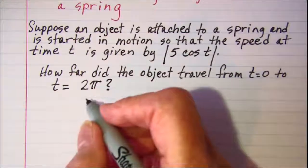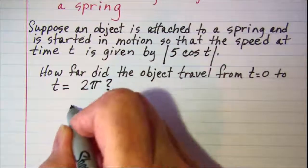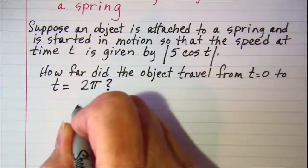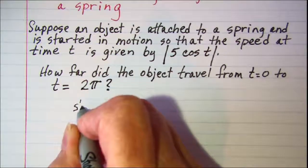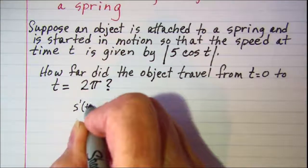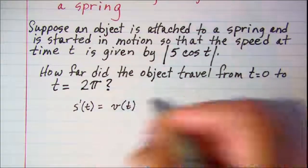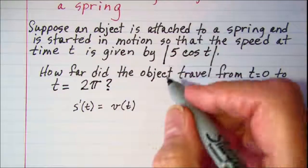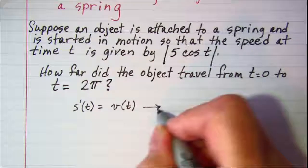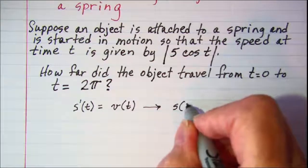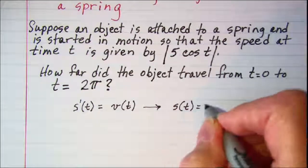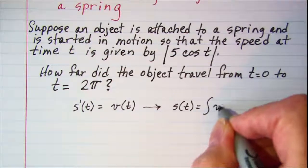Recall that from previous lessons we know that the derivative of our distance function is our velocity function. So from that we know that our distance function will be the integral of our velocity function.